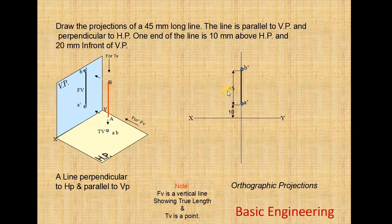A' to B' indicates the front view, which is equal to the true length because the line is parallel to VP. For the top view, we get a point. From XY to point A is 20mm, which also indicates point B — both coincide. A' and A should lie on the same vertical line, and B' and B should also lie on the same vertical line. That is why we get all four points on the same line.